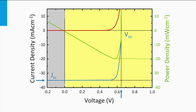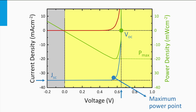We have added the power density in the JV curve as a function of voltage using a green curve, with the vertical axis on the right showing the scale of power density. Note that if the power density is negative, it means the solar cell is generating power, whereas if the power density is positive, it means the solar cell is consuming or dissipating power. The green curve shows that the power density varies with voltage and has a maximum. This point is called the maximum power point, and the power density generated there is P max. At open circuit the power density is zero, and at short circuit the power density is zero as well.